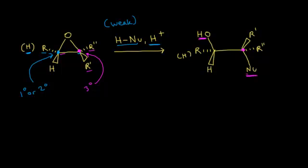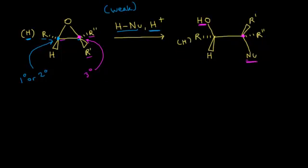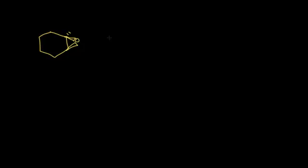Let's take a look at a reaction and run through the entire mechanism for this ring opening. Starting with my epoxide, I'm going to have my epoxide coming out at me in space, and at the top carbon I'm going to have a methyl group going away from me in space. I'm going to react this epoxide with ethanol — ethanol is going to function as my weak nucleophile. And it's acid-catalyzed, so I'll put my protons in there.